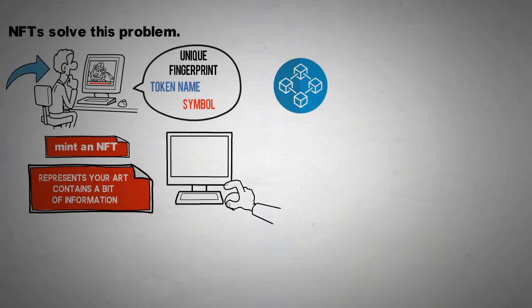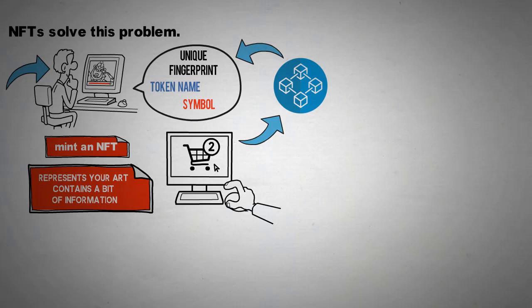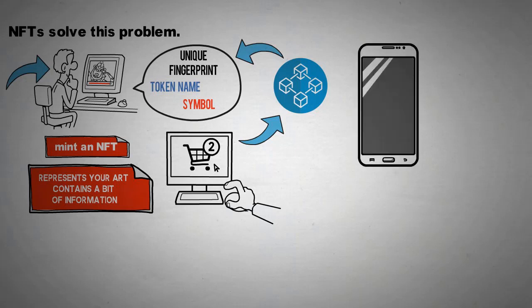Now you can sell the token by creating a transaction on the blockchain. The blockchain makes sure that this information can never be tampered with, and it also allows you to track who's the current owner of a token and for how much it has been sold in the past.